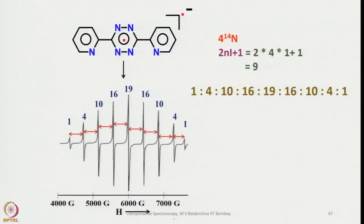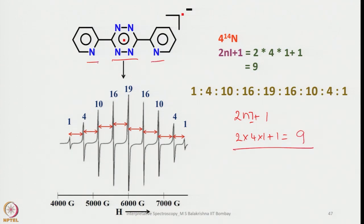Now let us look into this radical anion. The electron would first couple with these 4 equivalent 14N nuclei. Applying the 2Ni+1 rule, we are expecting 9 lines. If we consider only the 14N interaction and leave the hydrogens aside for now, we primarily get 9 lines with this intensity ratio — this is for the radical with nitrogen.